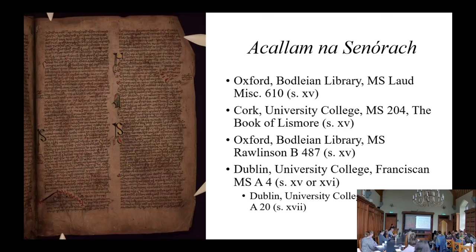Another edition by Standish O'Grady was published earlier than that, but it's only based on the Liz Moore version and does not take into account the other manuscripts. Scholars nowadays generally use Stokes's edition, but obviously a new edition is desperately needed. As for a translation of the text, O'Grady and Stokes included some translations of part of the narrative in their publications, but it wasn't until 1999 that Anne, Julie, and Harry Rowl finally gave us a full translation of the text.